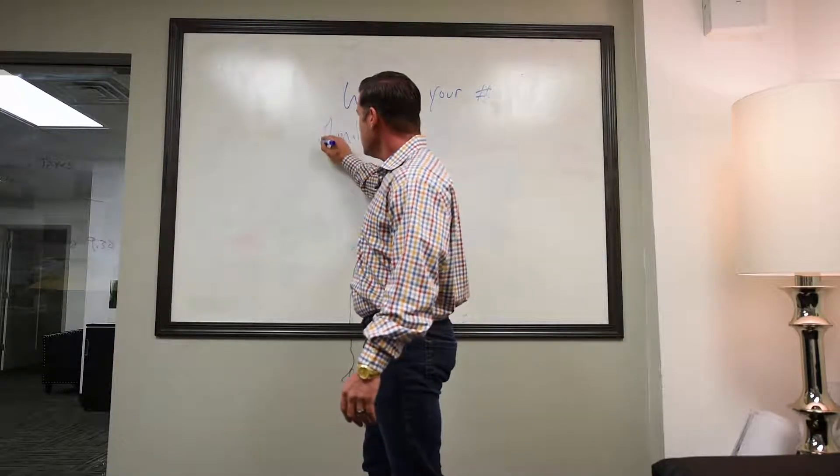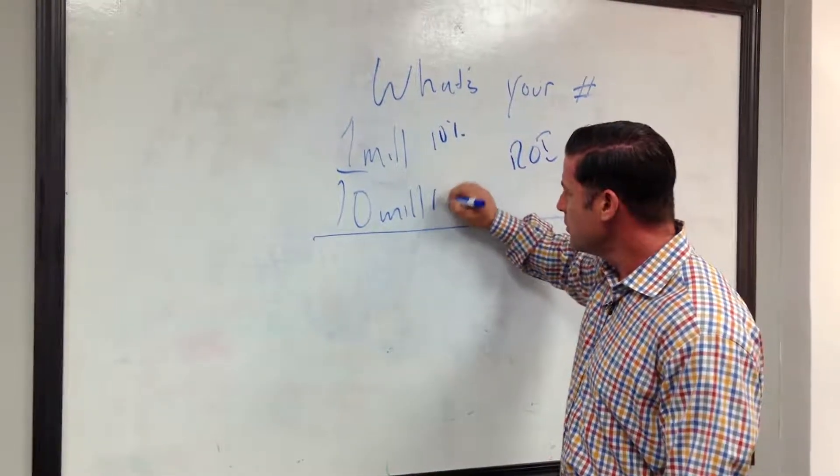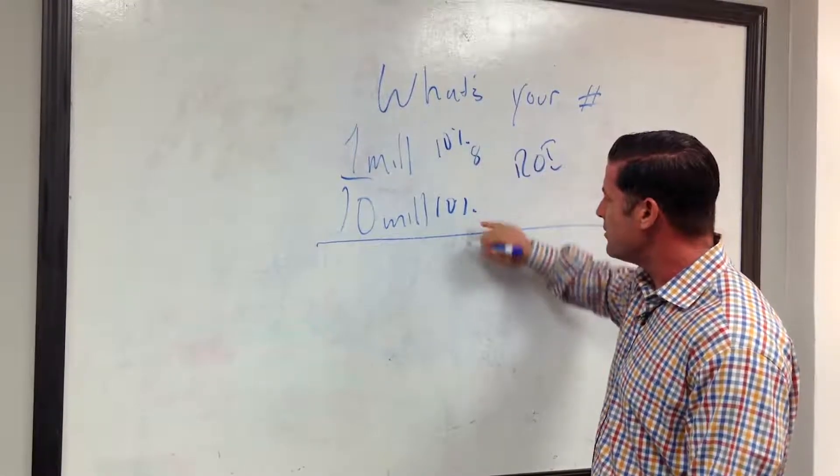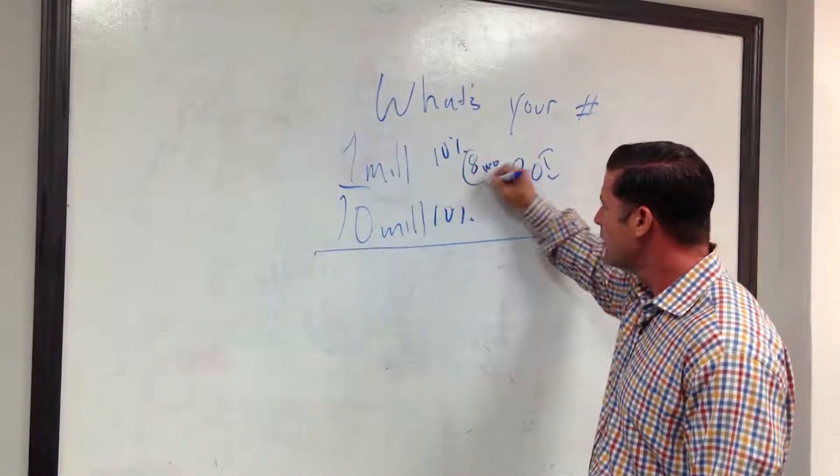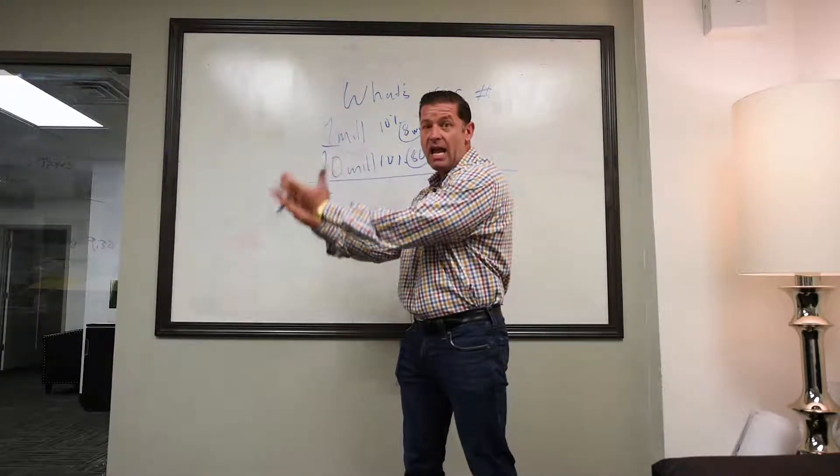If we take one million or 10 million and did a 10% return on these numbers, right? This is just for easy numbers sake, this is 8,000 a month, and this is 80,000 a month. Okay, maybe I don't need 10 million.